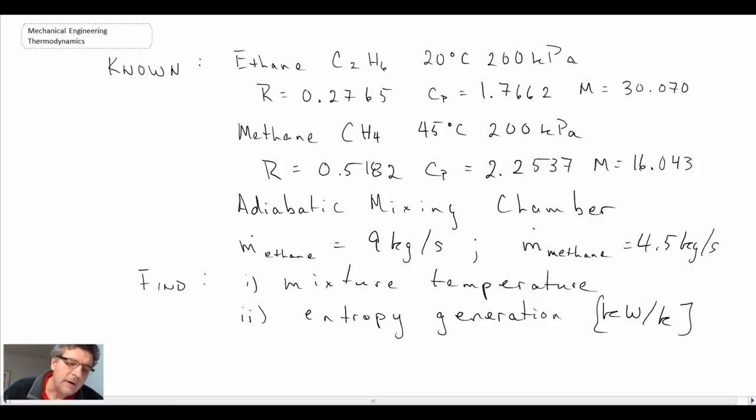So those are the things that we know. I've gone into the back of the book and pulled out the values for the gas constant for both ethane and methane, specific heat, as well as molar mass. Now the temperature change here is not that significant - we're going from 20 to 45°C, so the mixture coming out is going to be somewhere between those two. Consequently, the specific heats are not going to change that significantly, and we can make approximations there. We don't have to do the exact analysis where you'd have large temperature swings.